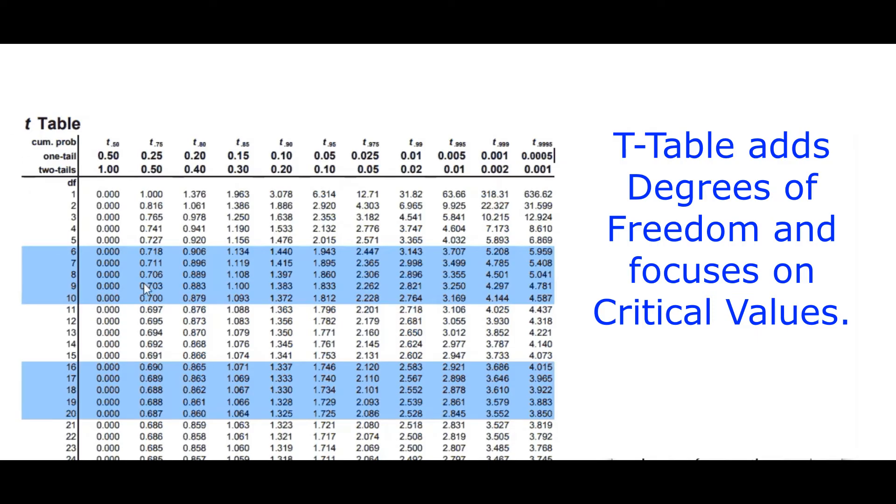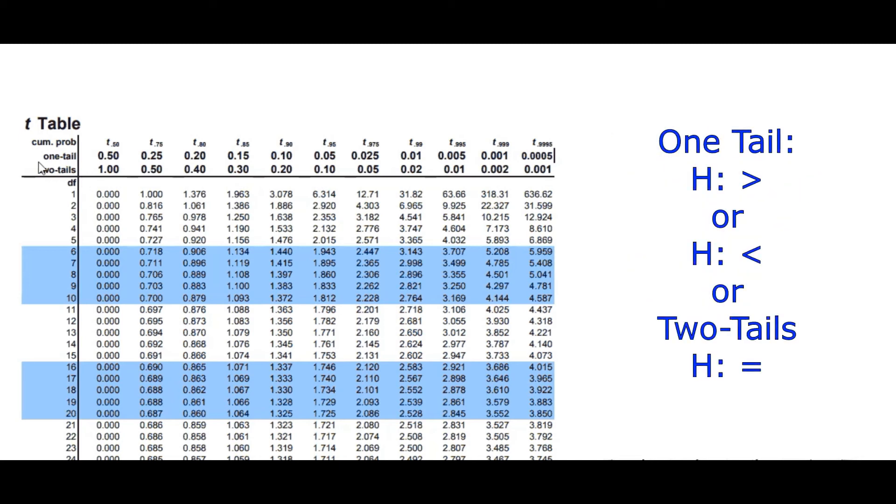So if I wanted to look at one tail or two tail, that, of course, is going to be dependent on your hypothesis test. Your hypothesis will say if it's greater than or it'll say it's less than, not both. If it's doing both, then that's two tails. And that would be equal or not equal.